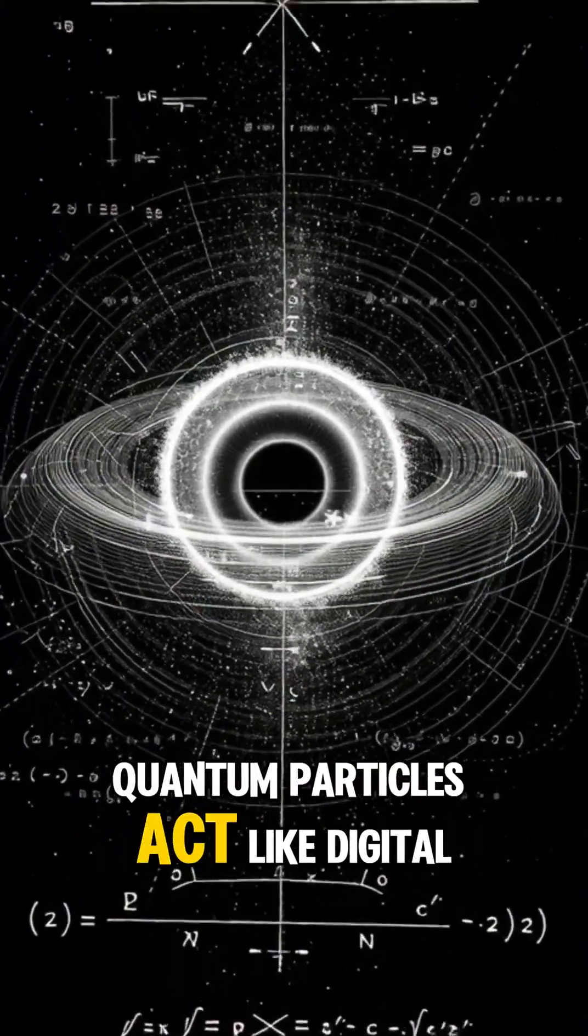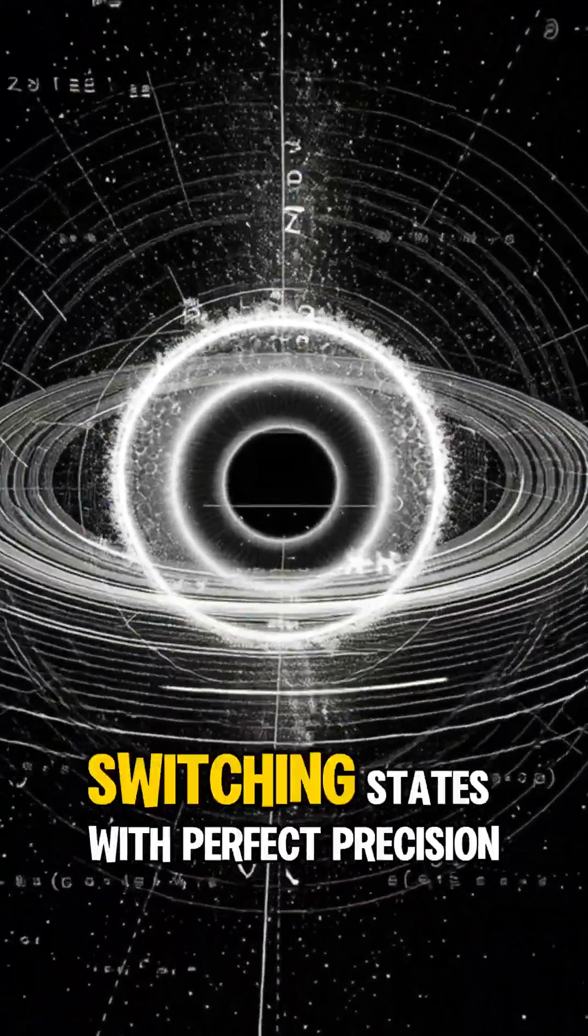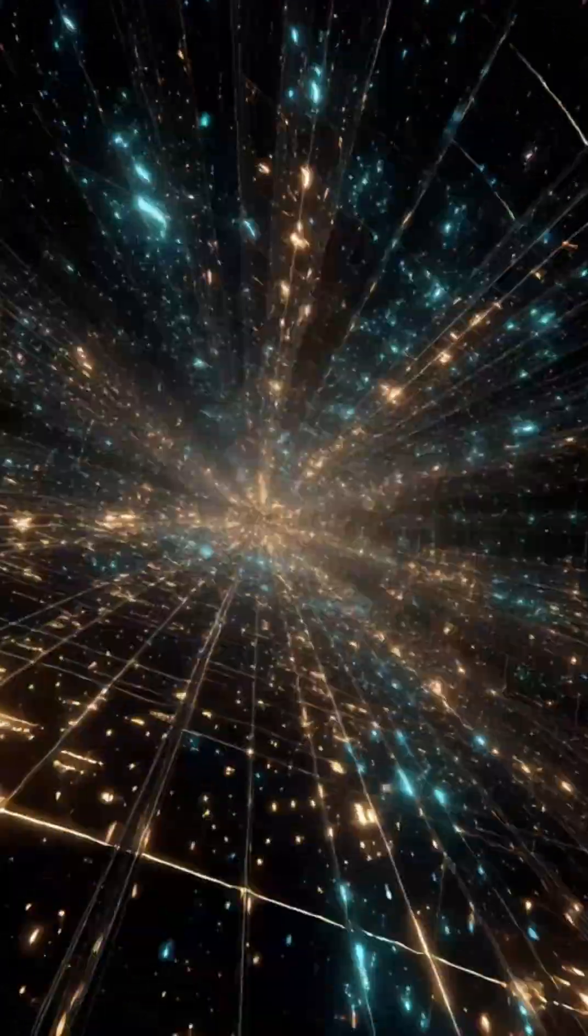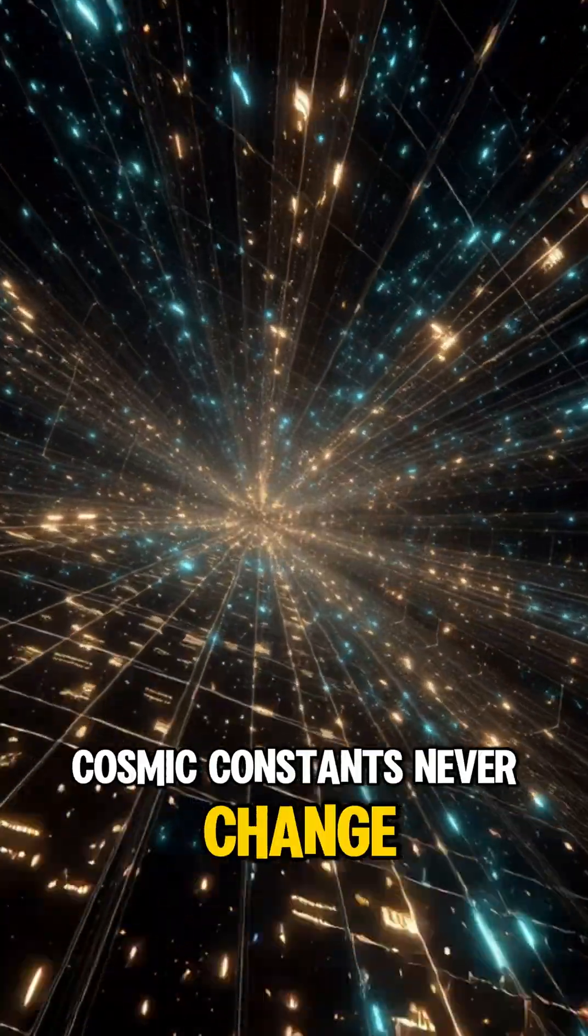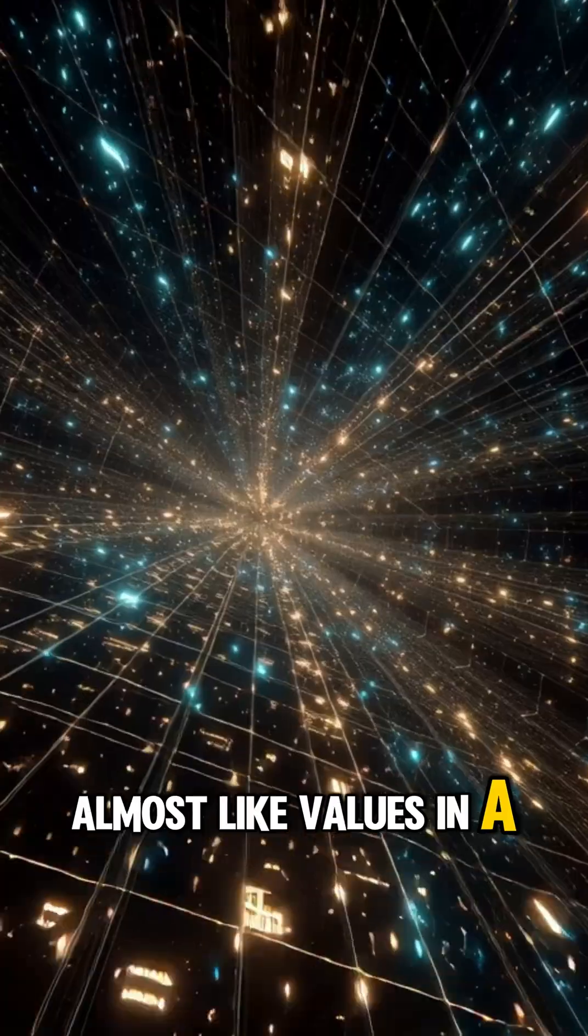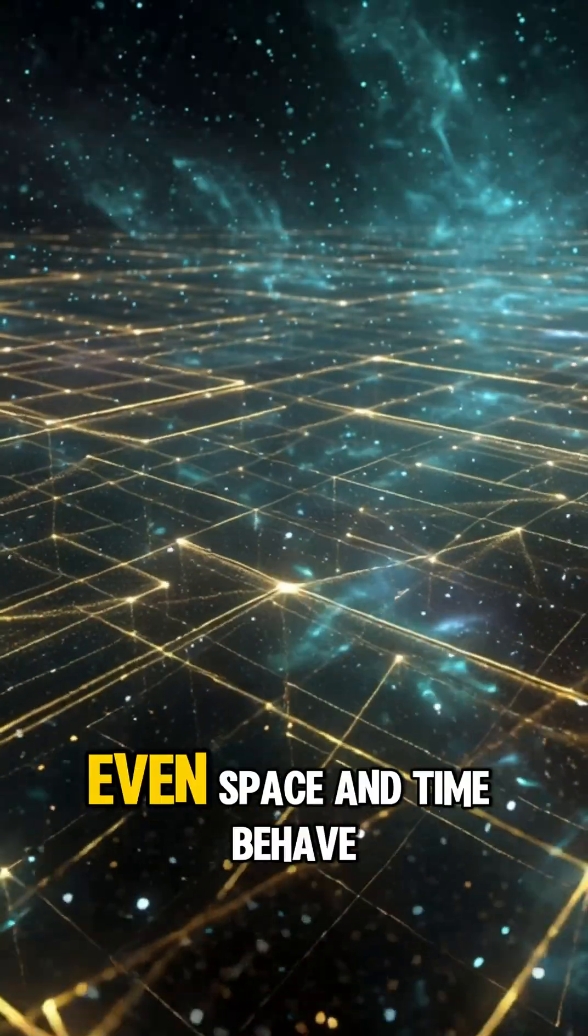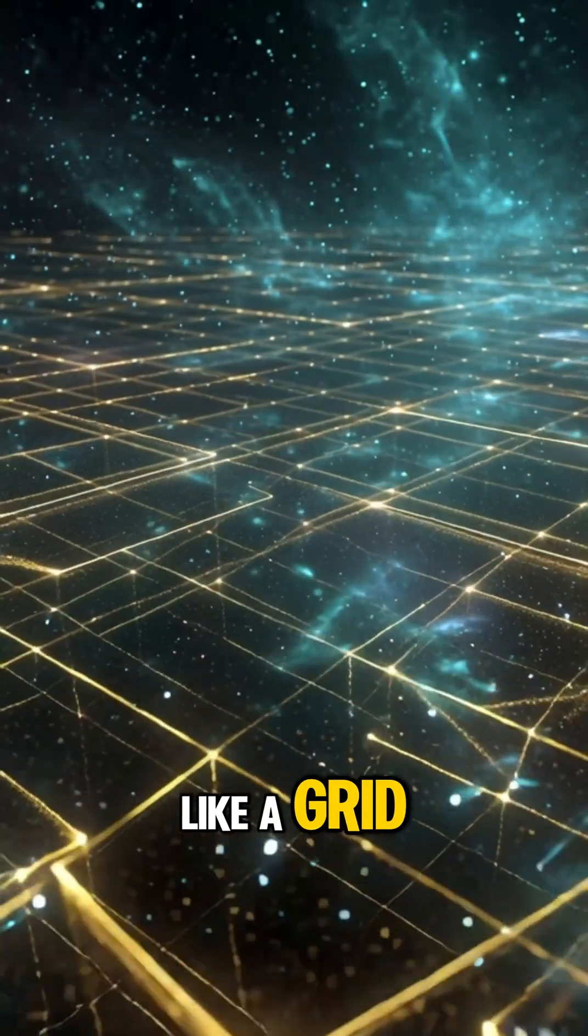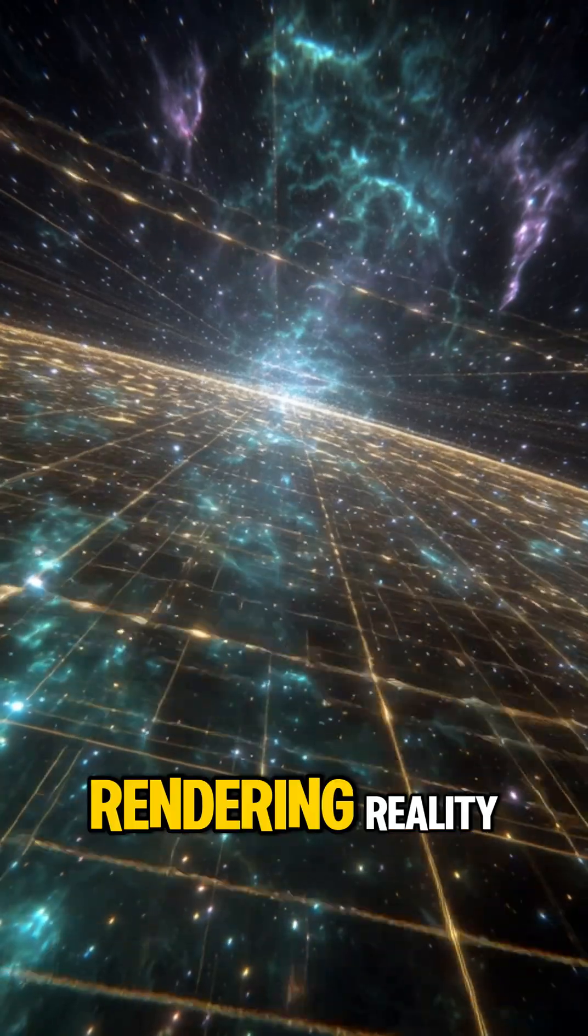Quantum particles act like digital pixels, switching states with perfect precision. Cosmic constants never change, almost like values in a gigantic program. Even space and time behave like a grid, as if the universe is rendering reality.